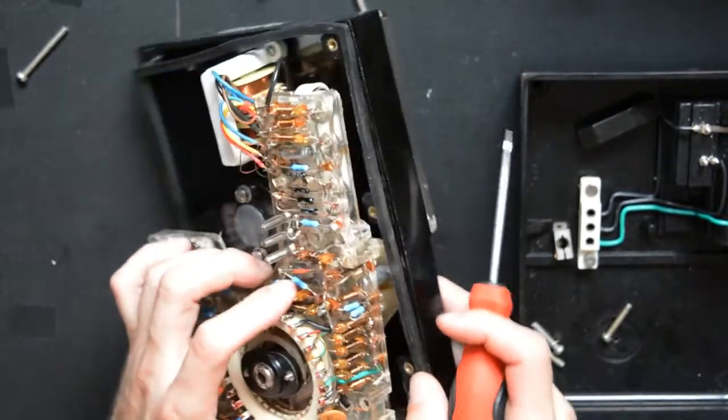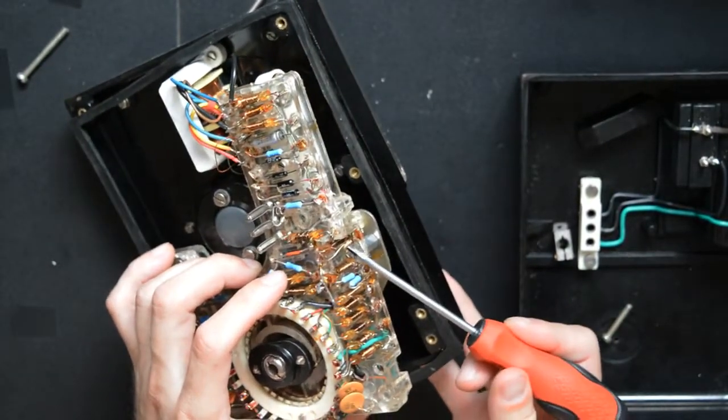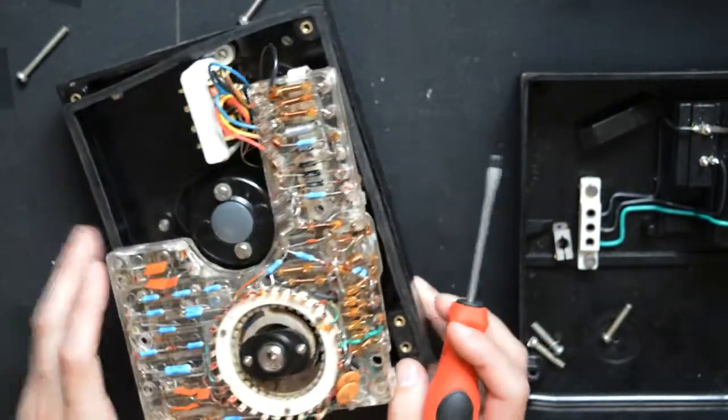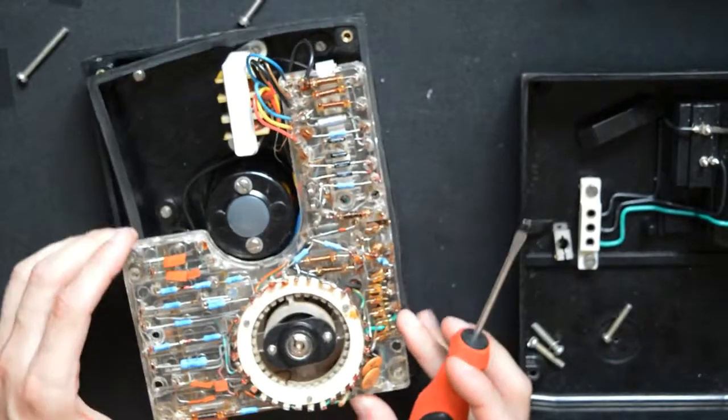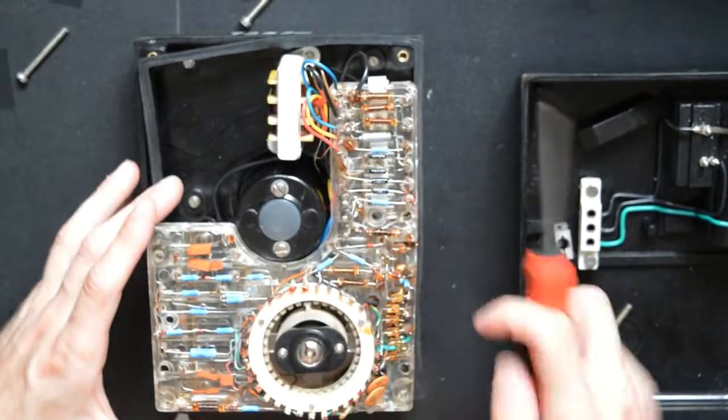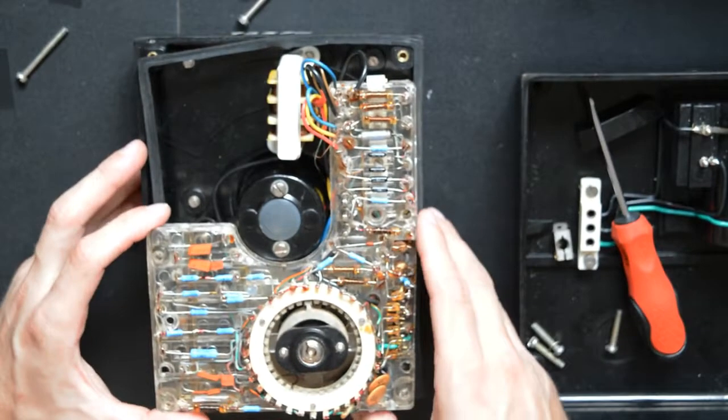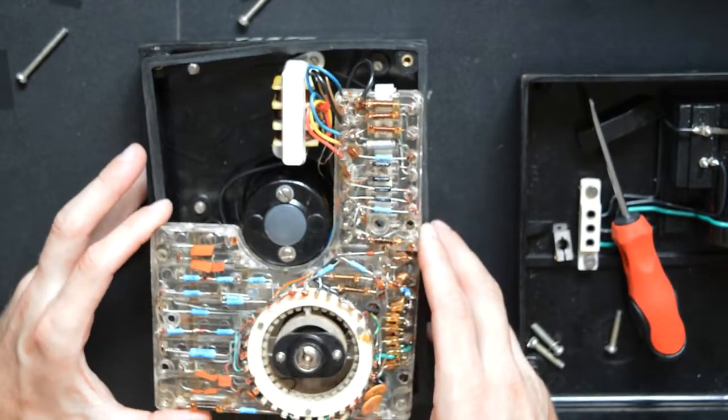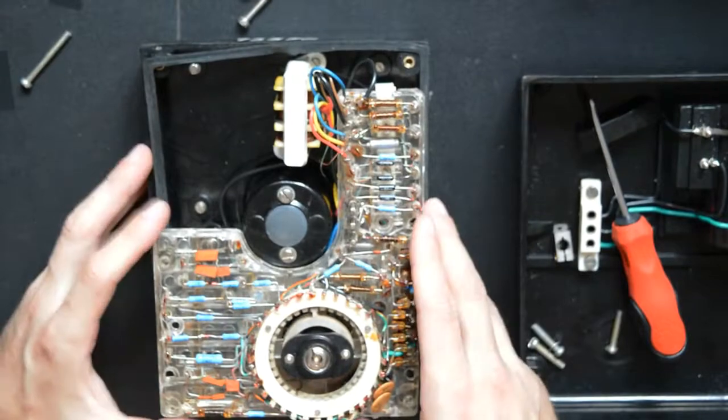And we also see here a thermistor, this component right here. Now, this is used to compensate the variation of the resistors with temperature. In the manual, it says that this thing will work from 0 to 40 degrees. So if it's winter or if it's summer, it won't work. Tough luck.